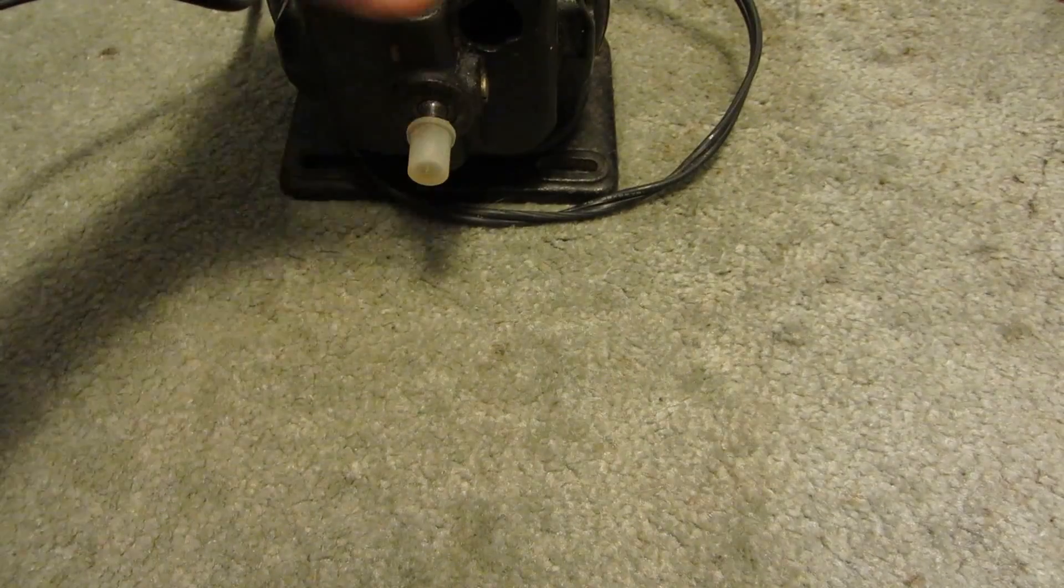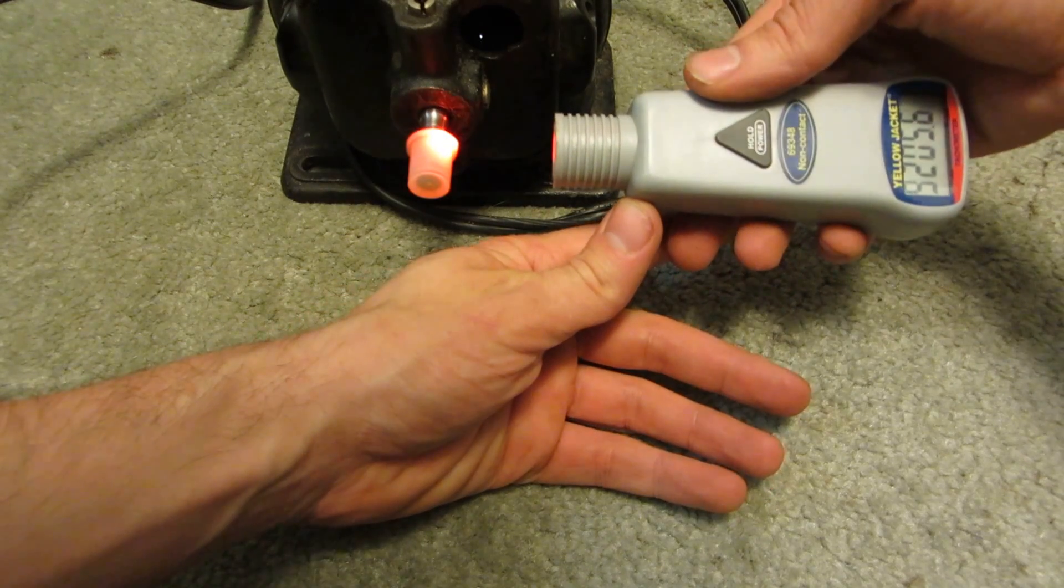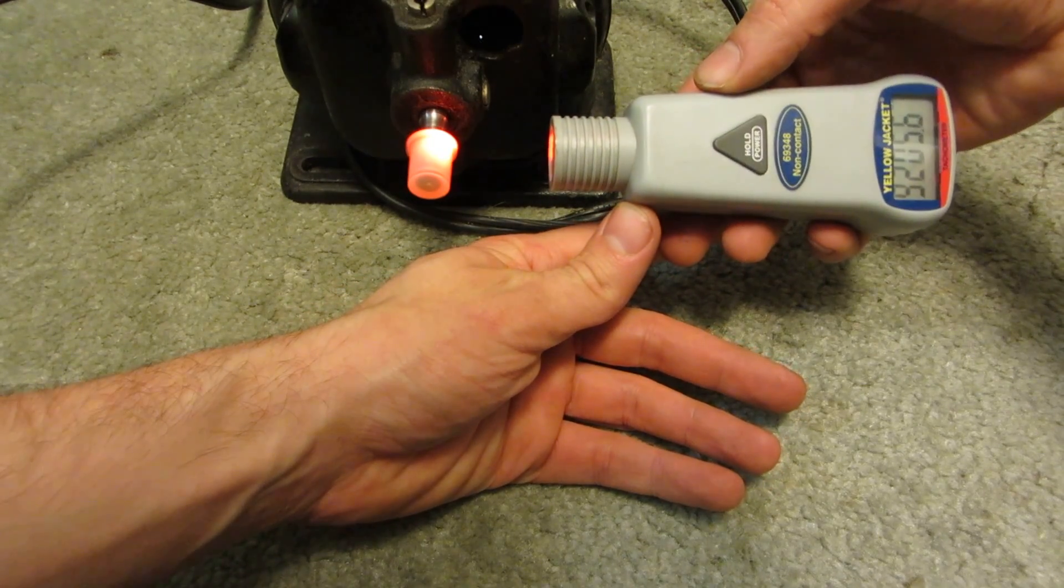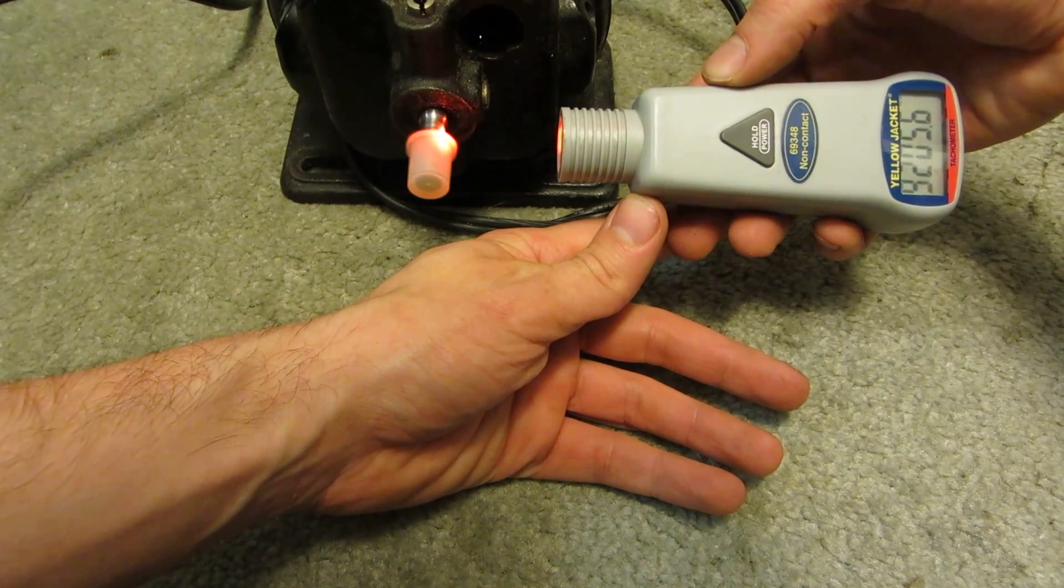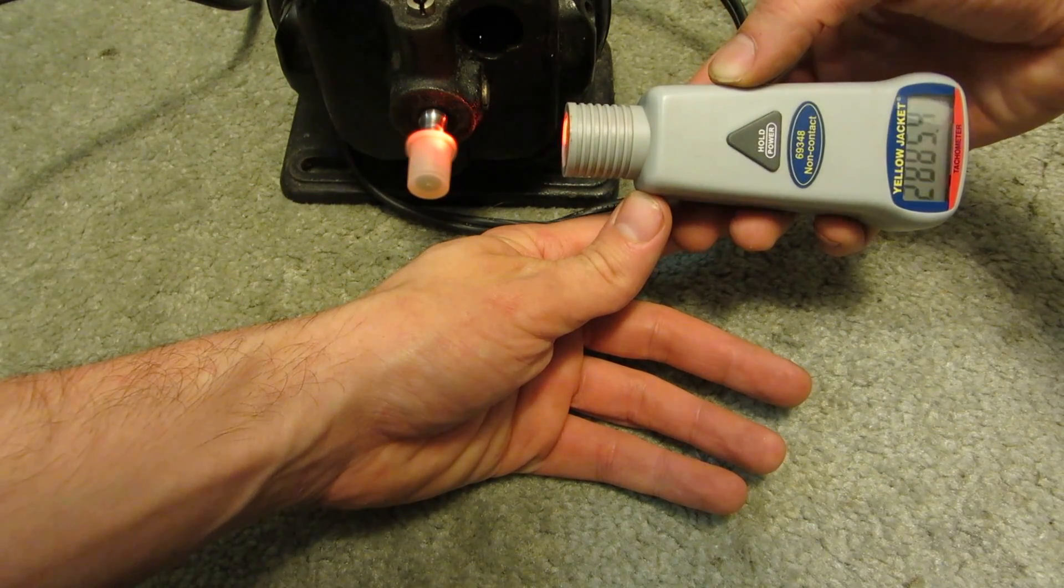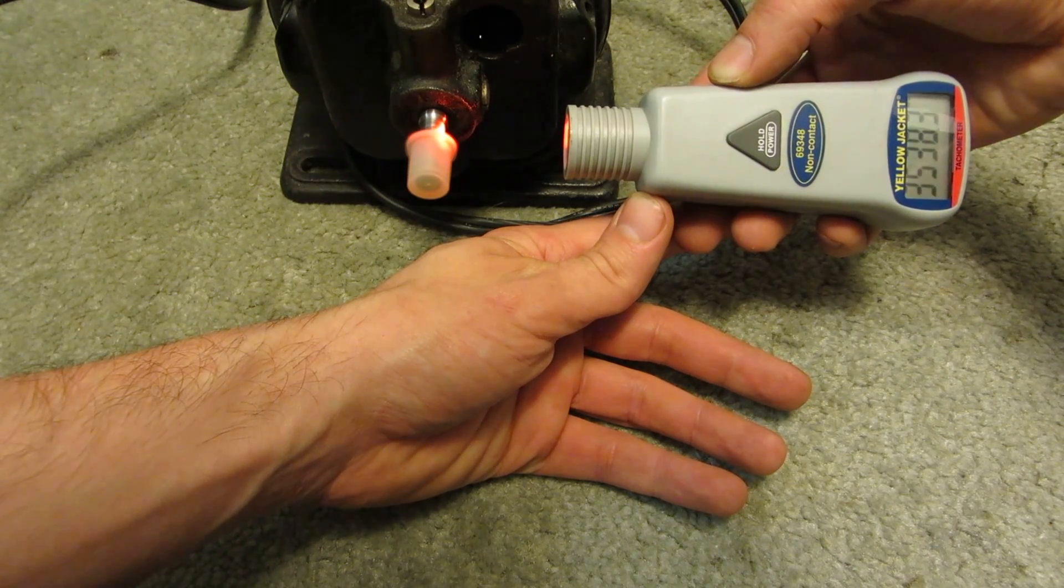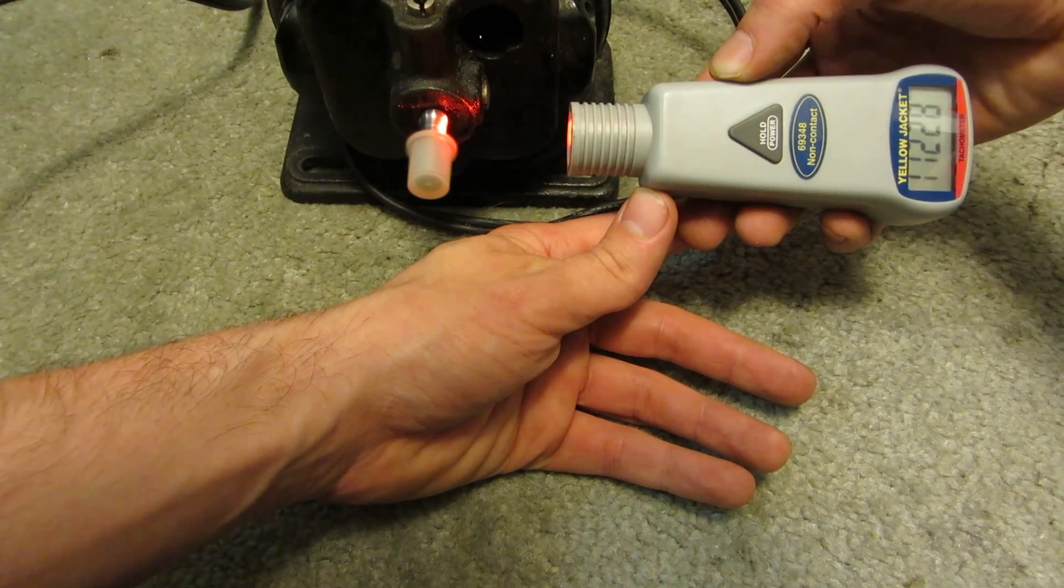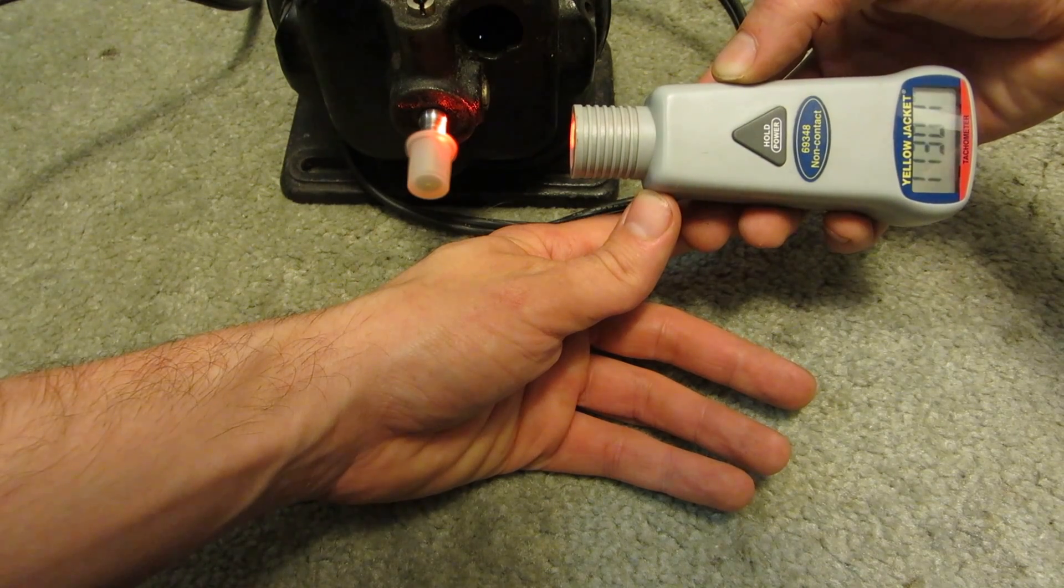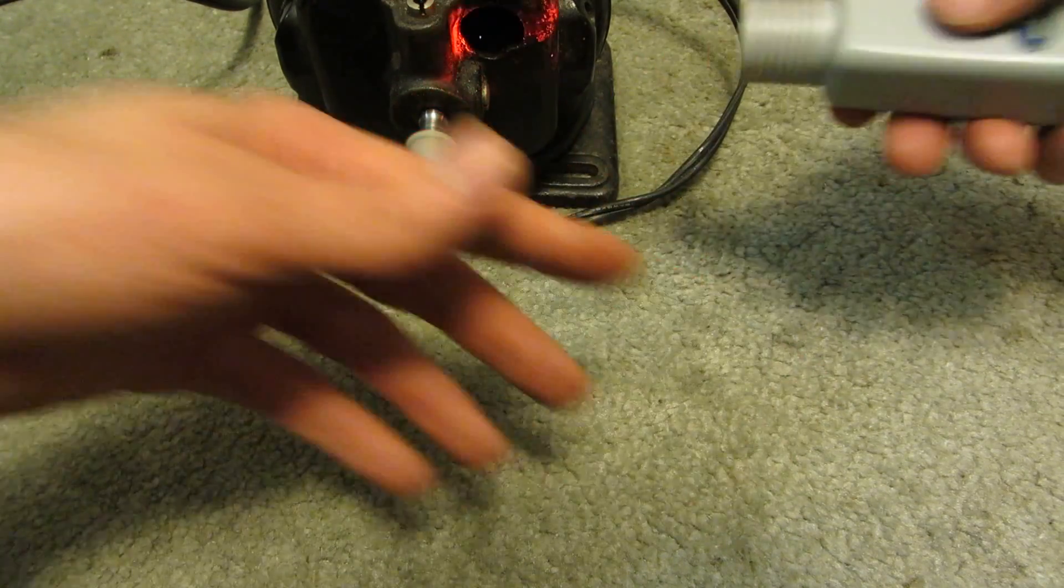Now if you want to check something with the much higher rpms, say this edison motor, which according to this tachometer... It's been a little hard to get a proper reading. There we go. 11,300. 11,360.